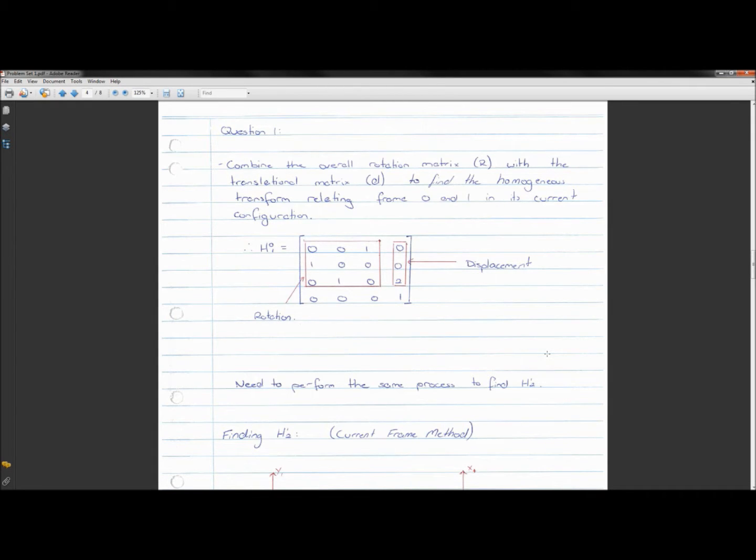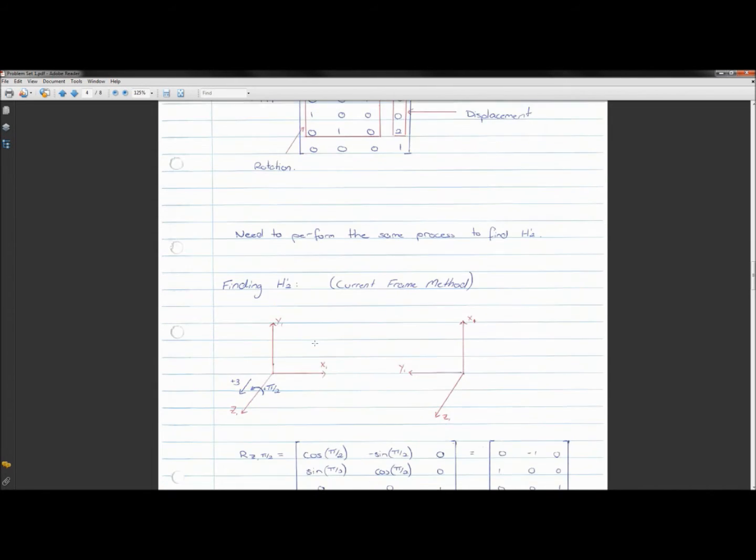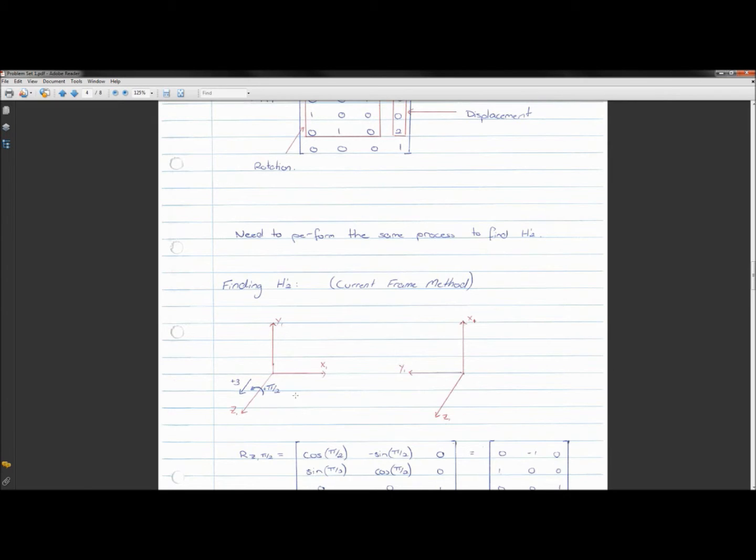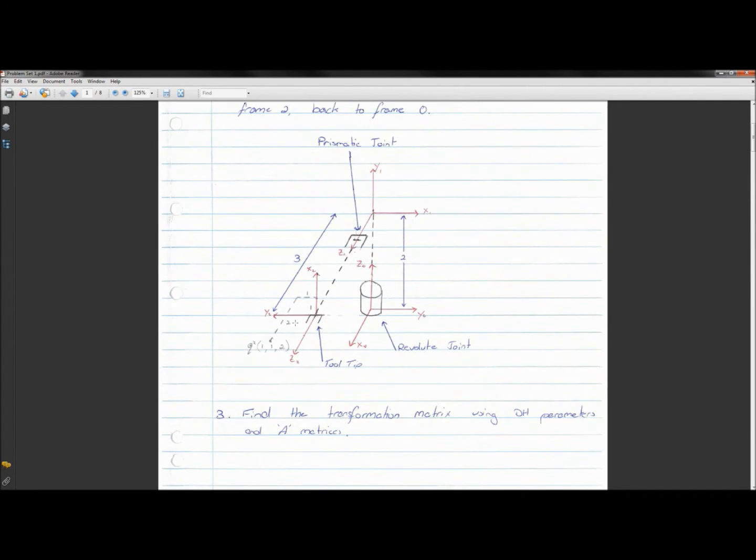So we need to do the same process to find H1,2. So if we use the same current frame method, to get the first reference frame looking like the second reference frame, you can go look back at the picture quickly. So to get this one and this one, all we need to do is to rotate. So you notice that the Z's are currently pointing the same direction. So we should rotate about those axes, whatever amount, to get the other two pointing the same. So to do that, we just need to rotate about Z, by 90 degrees.